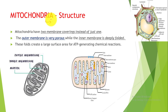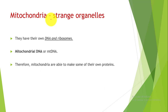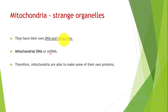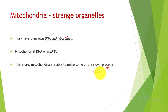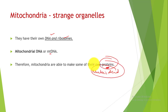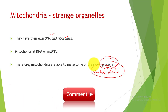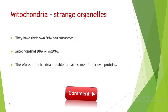Mitochondria is present in eukaryotic cells and is also known as a very strange organelle, because unlike other organelles, it has its own DNA and ribosomes. This genetic material is called mitochondrial DNA, or mtDNA. Why this happens is a debatable concept. Because of having its own DNA and ribosomes, mitochondria is able to make some of its own proteins and also produces nucleic acids. So it is a strange organelle.